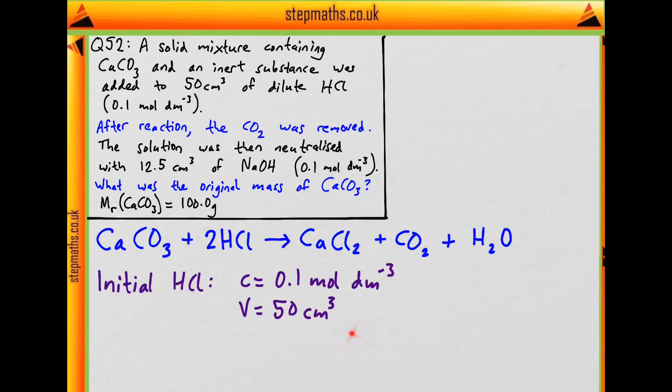What can we work out from this? That'll be the number of moles. But what do we need to do first? The volume is in cm³ but the concentration is in mol per dm³. So let's change the volume by dividing by 1000 to give 0.05 dm³.